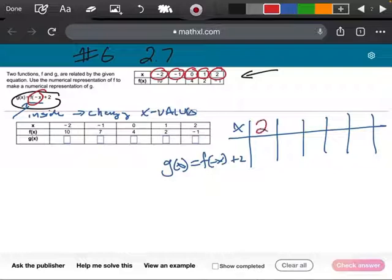So when this used to be a negative 2, now it becomes a positive 2. When this used to be a negative 1, a positive 1. 0 is still 0, but that's now a negative 1, and that's now a negative 2.